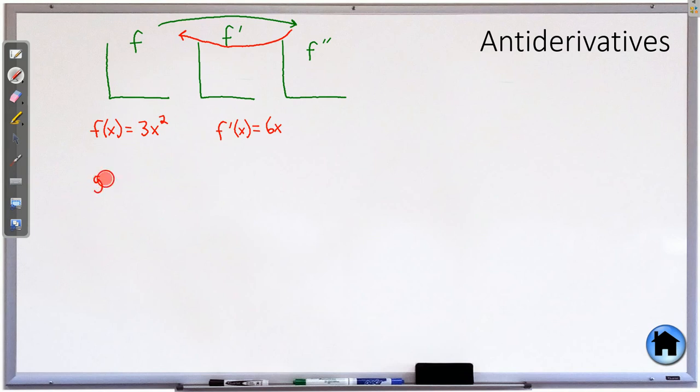If I give you a slightly simpler one. If we have G(x) equals 6x, that means G prime is equal to 6. So can we go backwards from there?